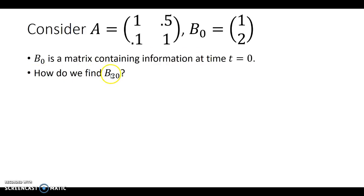So how do we find B20? In other words, how would we figure out what takes place at time t equals 20? Let's further suppose that A contains the quantities necessary to transition B0 to B1. Let's start with a basic concept and suppose that we want to find B1. B1 is going to be given to us by A times B0.